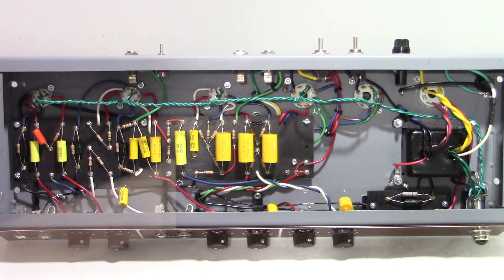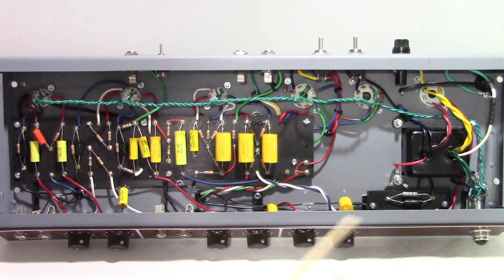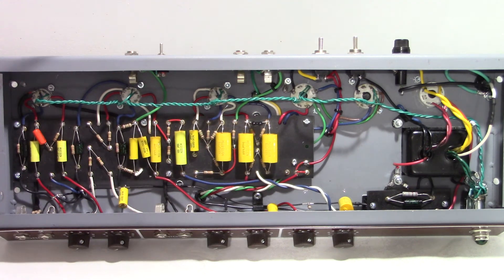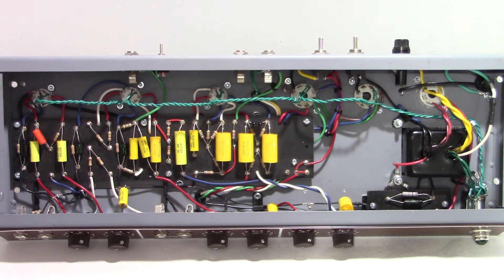Using Sprague capacitors here for bypass capacitors and also for the bias capacitor. And underneath the doghouse underneath the chassis here, I've got F&T filter capacitors.